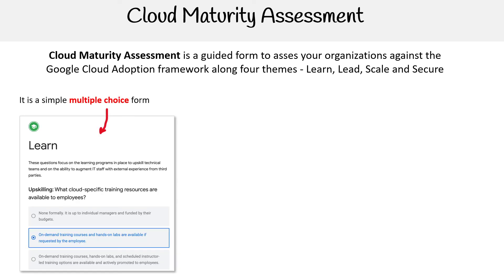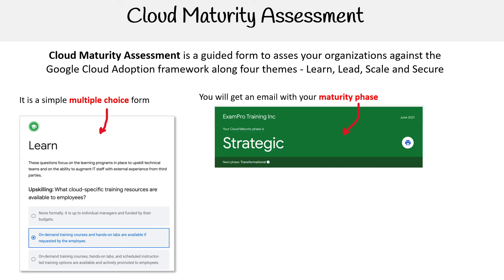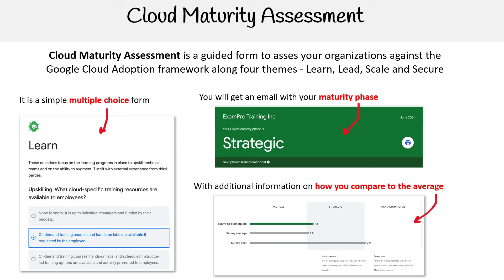It's a simple multiple choice form, and once you're done, you'll get an email with your maturity phase. So it's going to tell you, for example, that for learning you're at the strategic phase — that's where you are — and it'll give you some additional information on how you compare against the average.